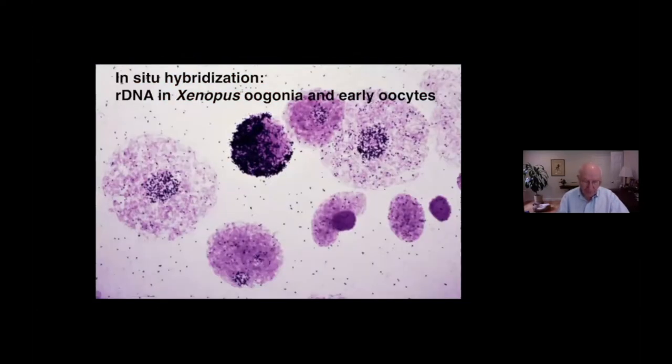Here is another view of early oocytes from Xenopus, showing the stages of ribosomal DNA amplification. In this case, the ribosomal DNA has been labeled with a radioactive tracer, shown here as black dots in the photographic emulsion that records the radioactive molecules. This technique of autoradiography would have been familiar to an earlier generation of cell biologists, but is much less commonly used nowadays.